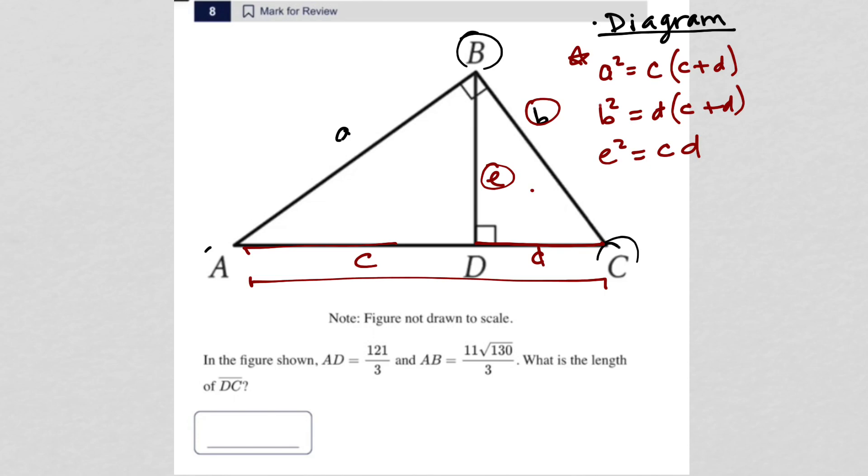So now all I need to do is label with what the question has provided me and know which parts of this I have and what part I'm looking for. So the question tells us that side AD is 121 over 3, so that means that our C value is 121 over 3. It also tells us that side AB is equal to 11 root 130 over 3, and that means that our A value is 11 root 130 over 3.